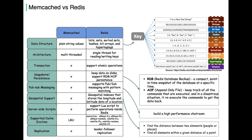Redis is often referred to as a data structure server, because it supports various data types, including strings, hashes, lists, sets, and more. This makes it more versatile for certain types of applications.